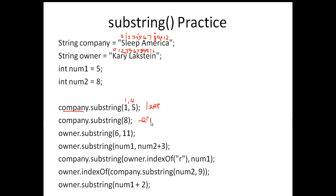For the third problem, owner.substring(6, 11): we're going from position 6 to 10 — that's one less than 11. Another way to look at it: 11 minus 6 is 5, so there are 5 characters. Starting at position 6 in owner, we get A, K, S, T, E.